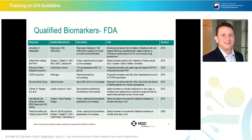In 2018, the Critical Path Institute and the Foundation for the National Institutes of Health qualified clusterin, cystatin C, KIM-1, NAG, NGAL, and osteopontin as a urinary nephrotoxicity biomarker panel by immunoassay. These were safety biomarkers to aid in detection of kidney tubular injury, this time in phase 1 trials and healthy volunteers.